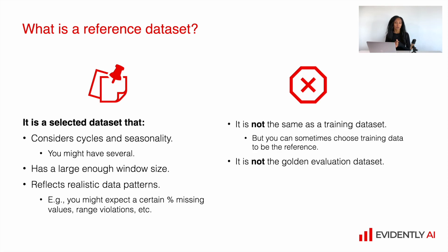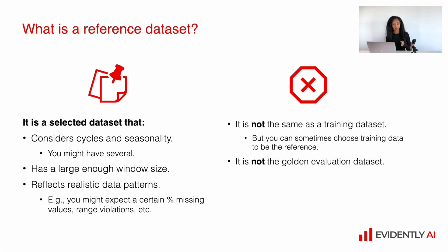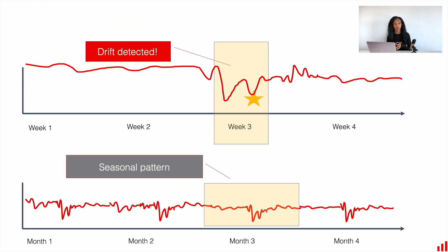For instance, in metallurgy we can work with sensor data. Some sensors can be broken for short or longer periods of time, resulting in missing values. It's important to include such cases in your reference dataset so that you can automatically compare a new batch of data with it — for example, comparing the share of missing values. If you see the share of missing values highly increased or decreased compared to your reference data, you can raise an alert and go debug. This is why it's quite important to analyze your historical data before creating your reference dataset.